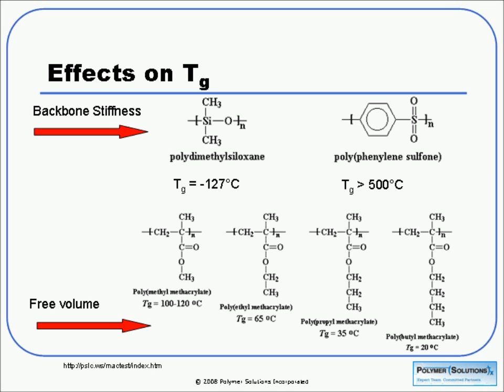Pendant groups can also affect things because they affect free volume. Here we see four different polymers where the backbone chain is the same in each case but the pendant chain is increasing. When you have a longer pendant chain, it makes it more difficult for different chains to get close to each other. Therefore there's more free volume between them — more area for mobility — and as a result, Tg decreases as you increase that side chain.